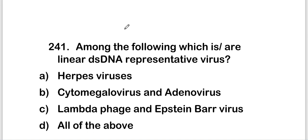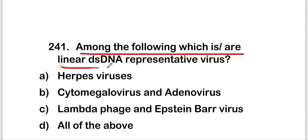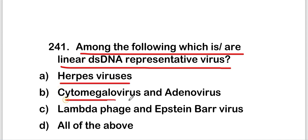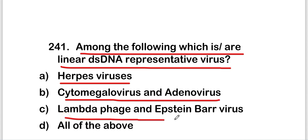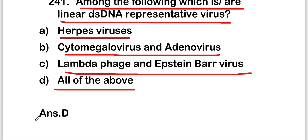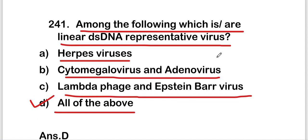Welcome to our new video on MCQs on virology — this is part 13 of the series. The first question is: among the following, which is or are linear double-stranded DNA representative viruses? The options are herpes virus, cytomegalovirus, adenovirus, lambda phage, and Epstein-Barr virus, or all of the above. The right answer is option D — all of them are double-stranded DNA representative viruses.